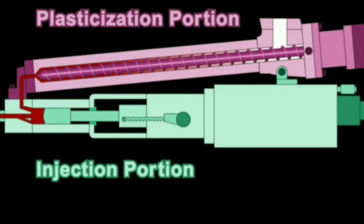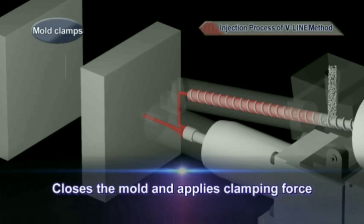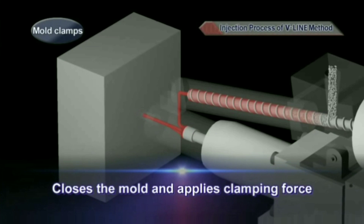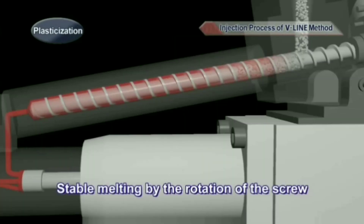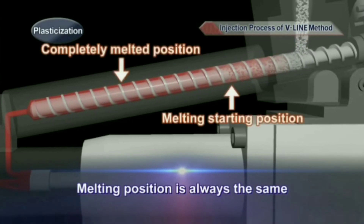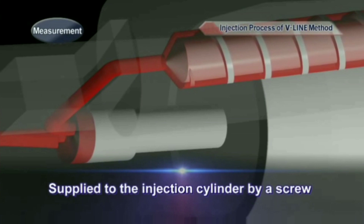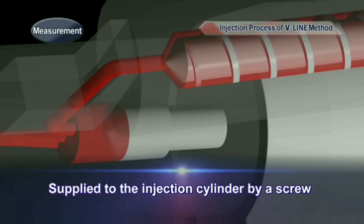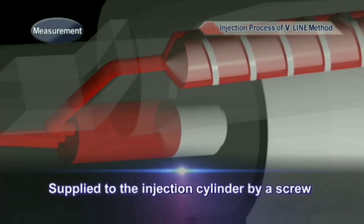You can clearly see the functioning: the screw is rotating and the plasticized material is accumulated in the injection chamber. The mold is closed and clamped. Material is charged from the hopper to the barrel, where a rotating screw along with band heaters plasticizes the raw material into melted form. This melted material moves to the injection chamber, where a plunger moves forward and injects the material inside the mold.